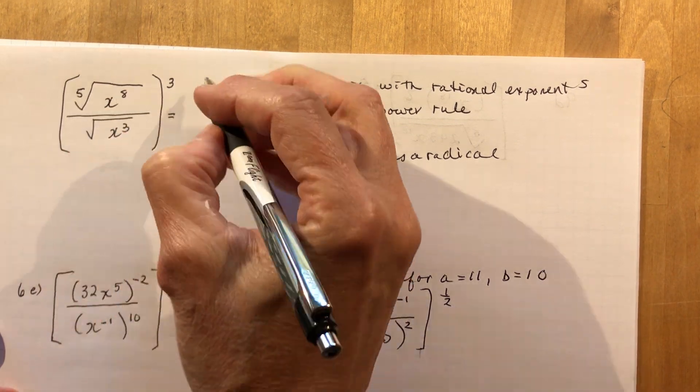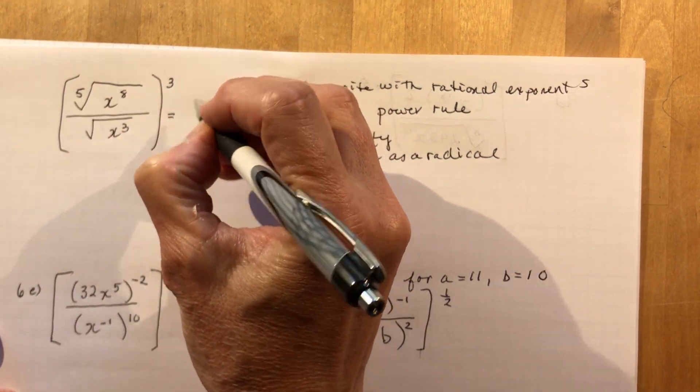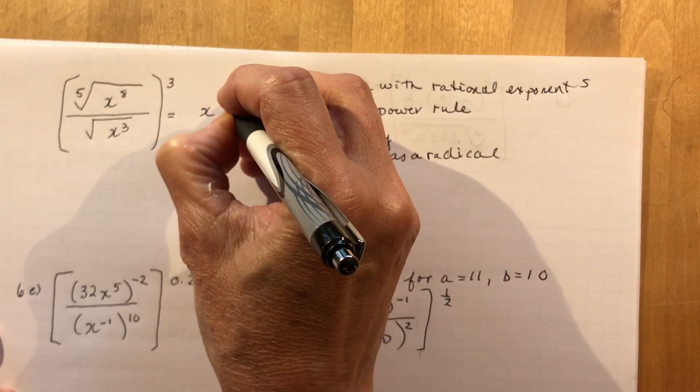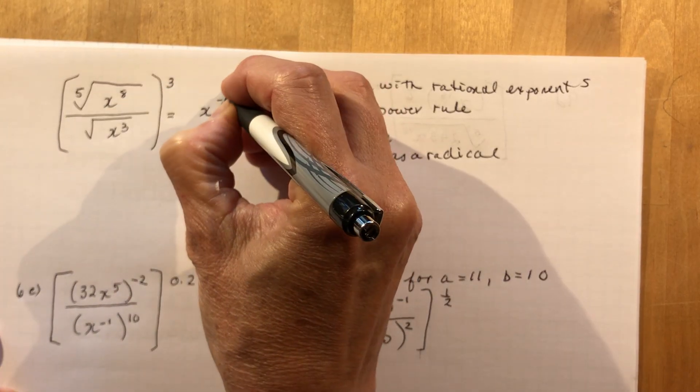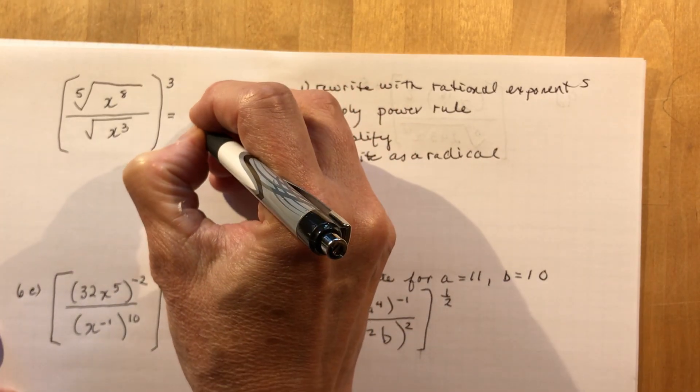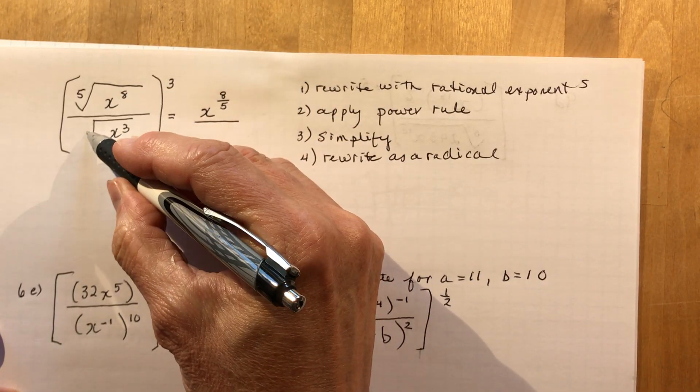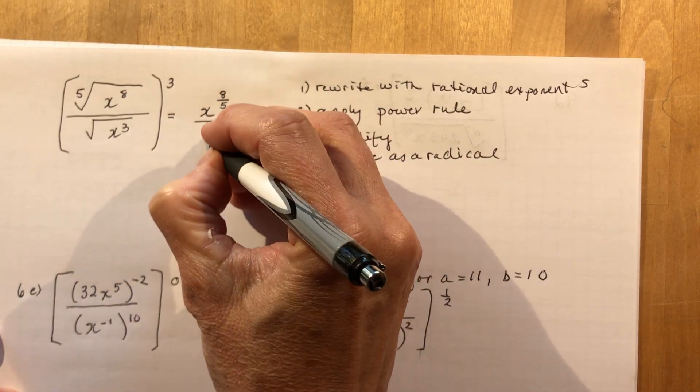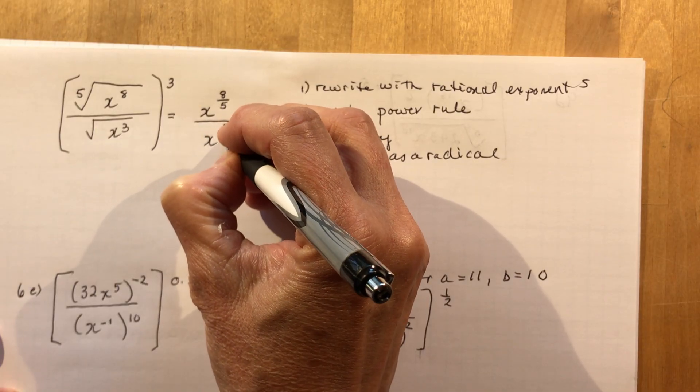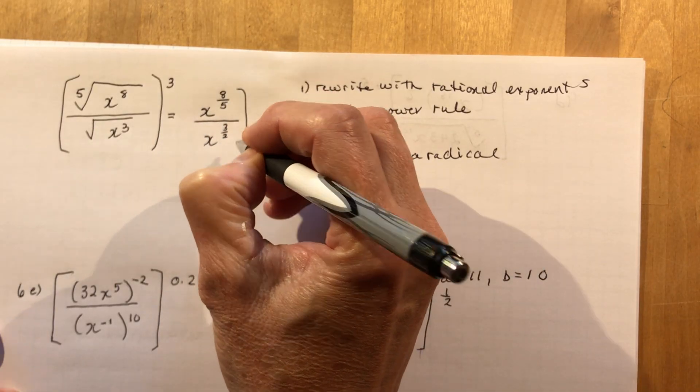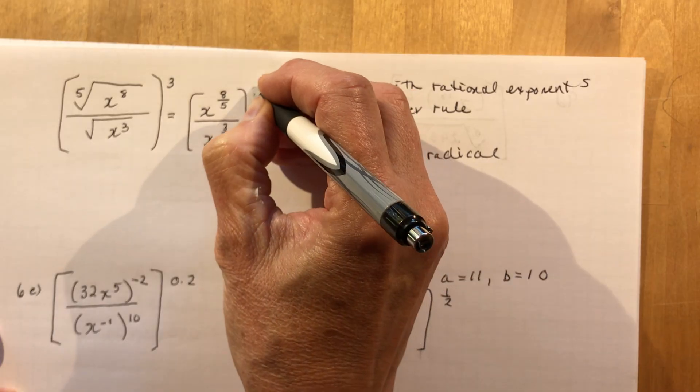So the fifth root of x to the eighth, that's x to the... Remember the 5 is your denominator and your 8 is your numerator. That's inside the bracket part here. And this is the square root, so that gives me 2 in the denominator and 3 in the numerator. And then the whole thing is raised to the third power.